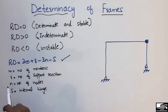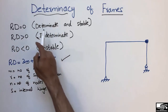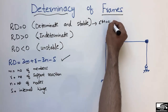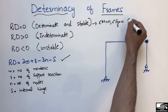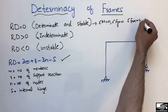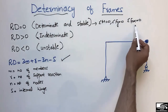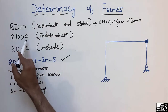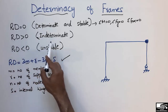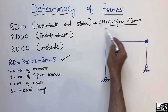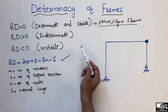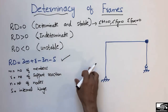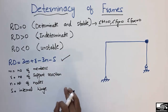By putting all values into this formula, we get our Rd value. If Rd equals zero, the frame structure is determinate and stable — we can solve it using the three equilibrium equations: summation of moments, vertical forces, and horizontal forces equal to zero. If Rd is greater than zero, the structure is indeterminate. If Rd is less than zero, the structure is unstable and will fall down upon loading.